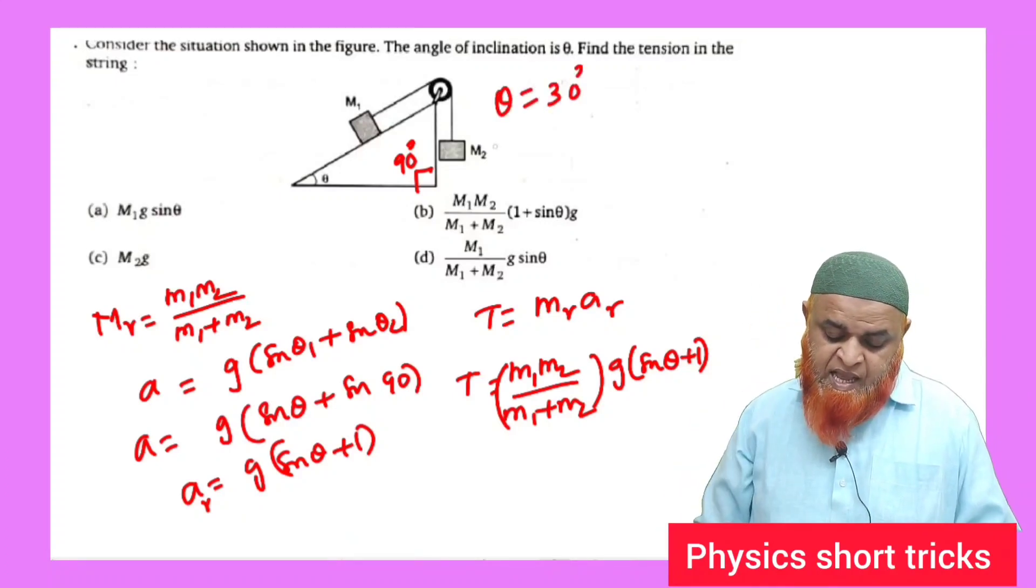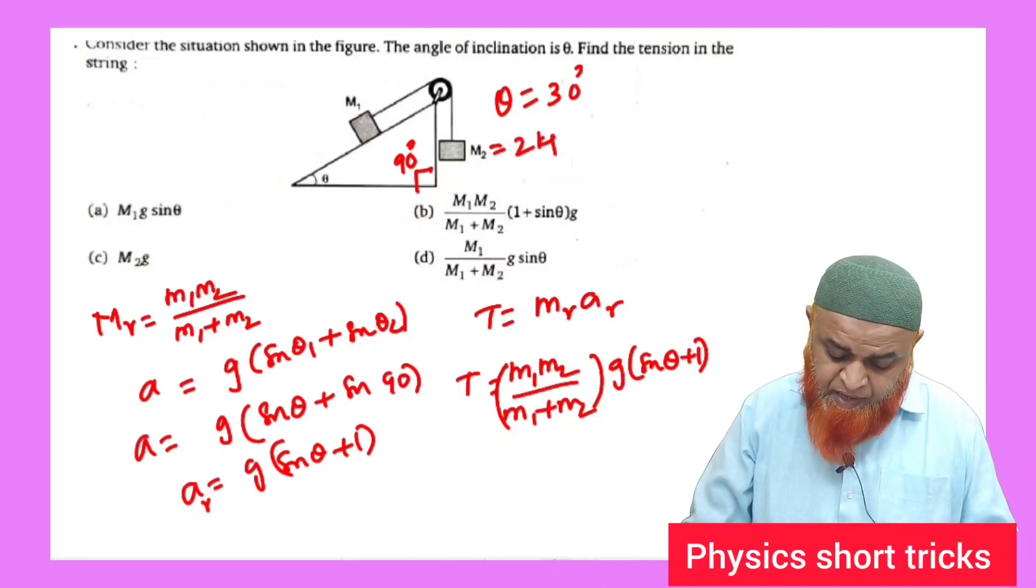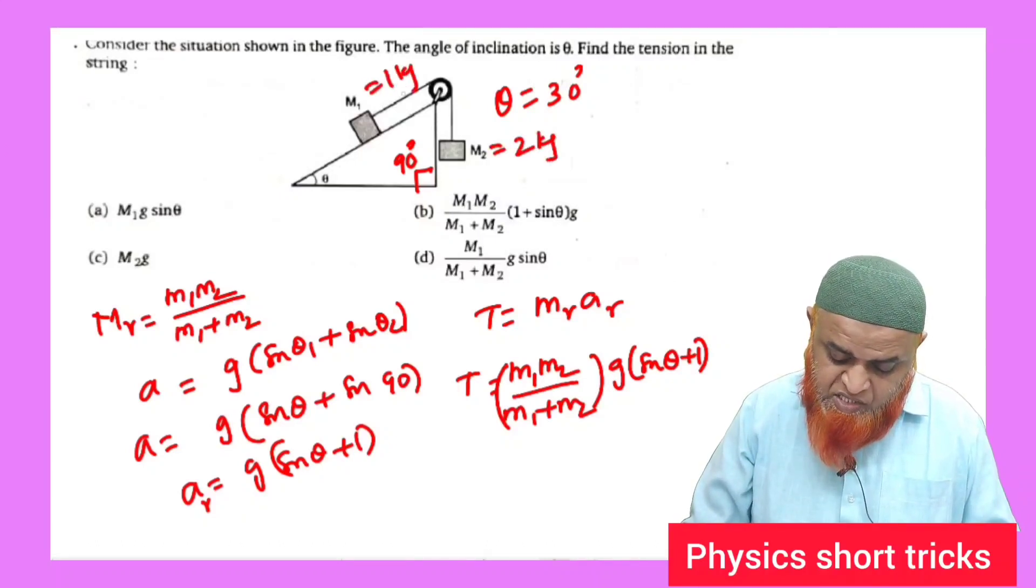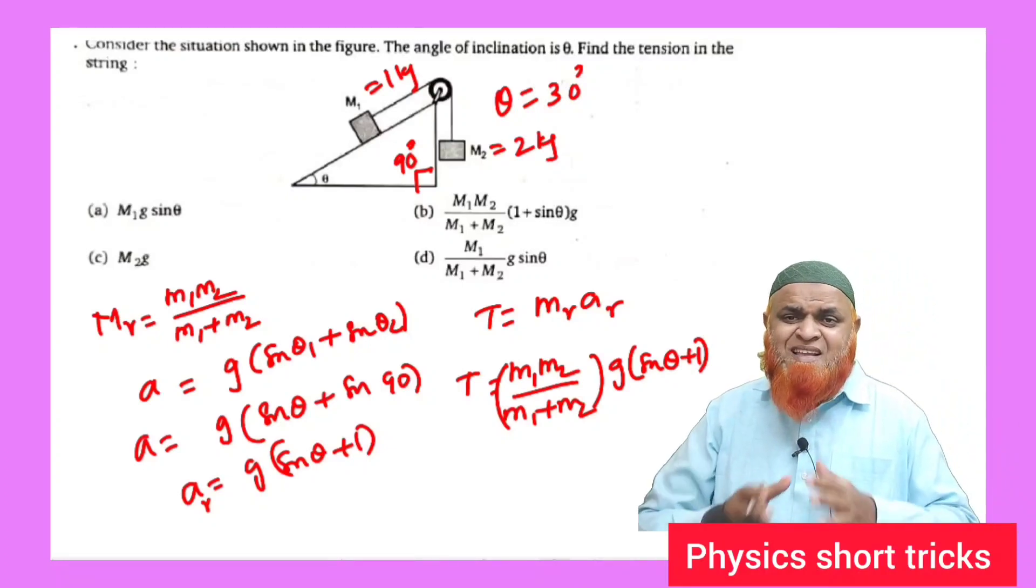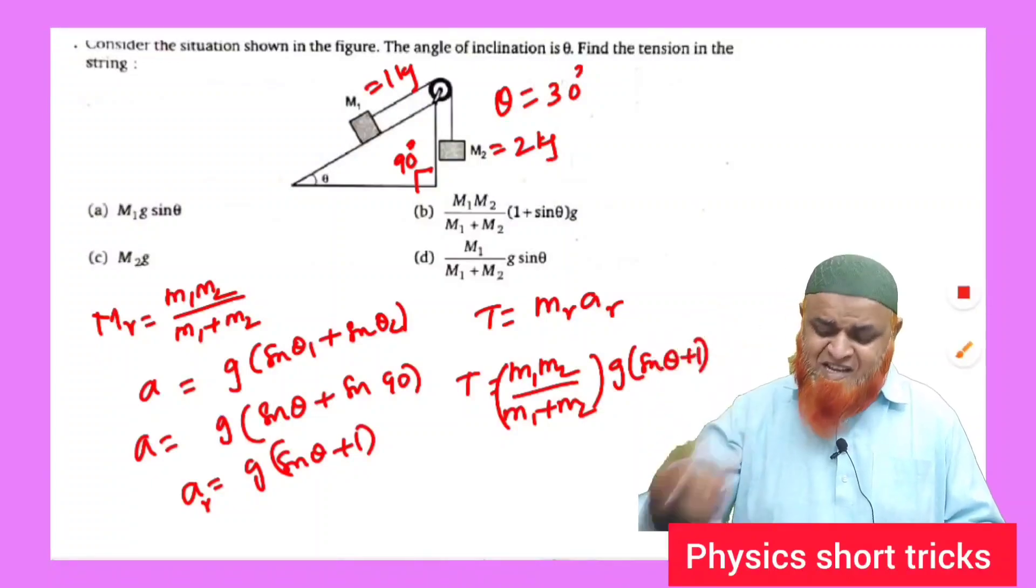If in this problem theta is given as 30 degrees and masses m1, m2 are given, for example m2 is given as 2 kg and m1 is given as 1 kg, directly you can substitute and get the answer. How do you feel? Thank you very much.